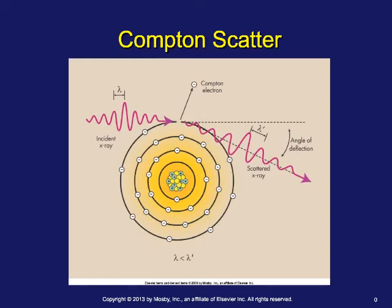With Compton scatter, an incident x-ray photon ionizes the atom, producing a Compton or recoil electron and a secondary photon that deflects at any angle — it's isotropic in production, also called modified or incoherent scattering. The problem is two-fold: it ionizes the patient, causing potential biological damage, and the secondary photon moving in a different direction lies to our detector software, suggesting information where there isn't any. It is essentially noise — like television static.